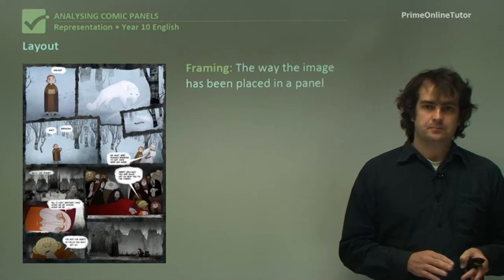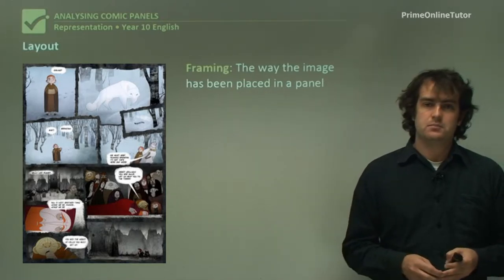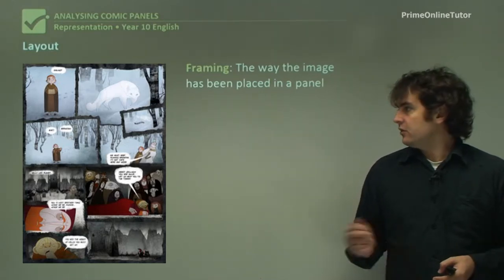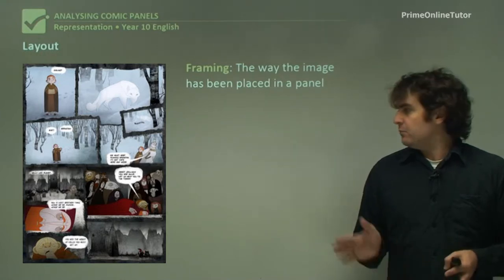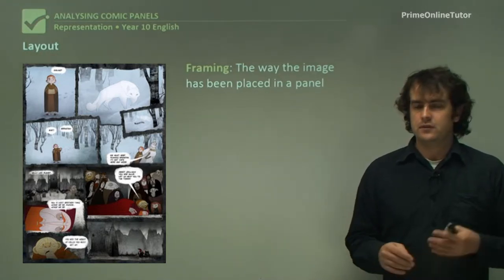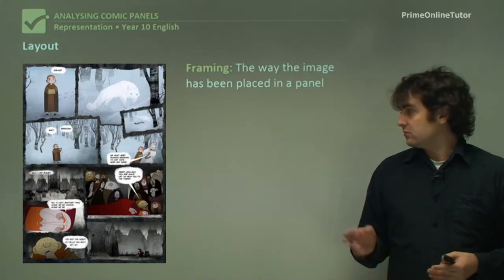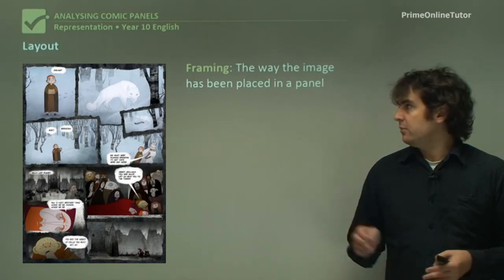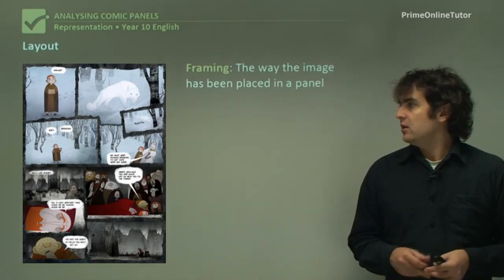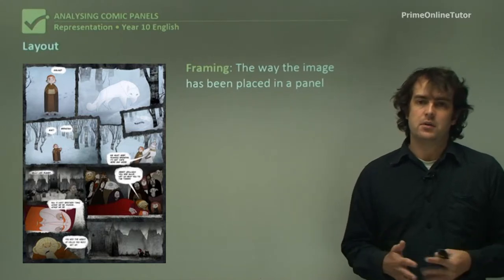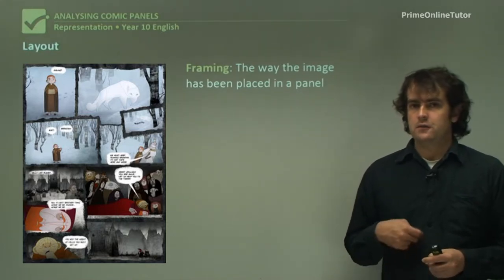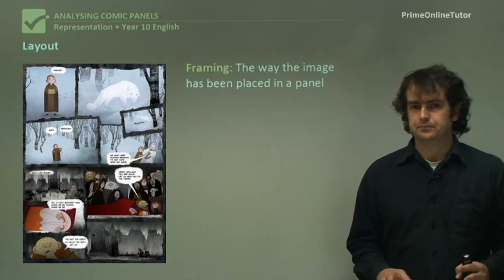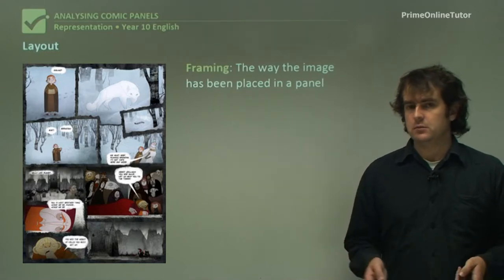First of all, layout. Framing is perhaps the most important part of the layout, which is basically how the image is being placed in the panel. If you have a look at this example, we've got a number of panels and a number of different objects in each panel placed in a certain way. For instance, if you look at the top left-hand corner, there's a full body of a person as opposed to perhaps a head shot. Framing is about that choice — why have the whole body as opposed to just the head?